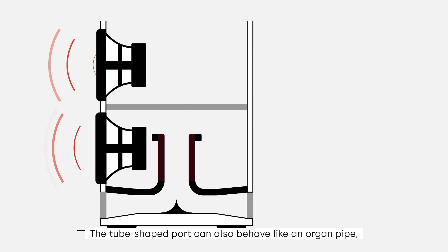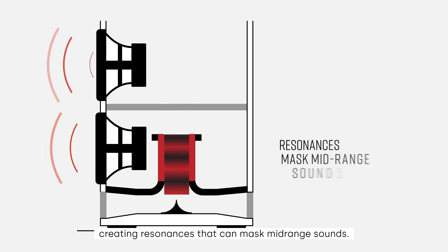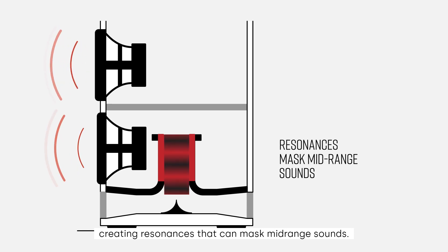The tube-shaped port can also behave like an organ pipe, creating resonances that can mask mid-range sounds.